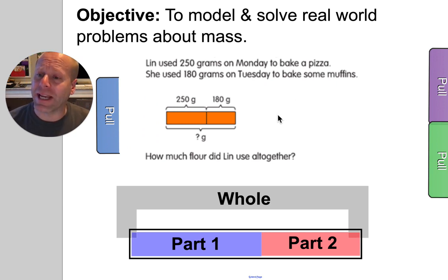So here we have a little girl making a pizza. This is a very realistic thing. I'm going to have pizza tonight. Alright, so Lynn used 250 grams of flour to make pizza on Monday. So here she is cooking on Monday. And then on Tuesday, she used some more flour. She used 180 grams of flour on Tuesday to bake some muffins. So she's cooking in the kitchen. She uses 250 Monday. She uses 180 Tuesday. How much flour did Lynn use all together?